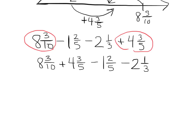Now first thing I see is let's subtract here. We're going to add in 4 and 3 fifths but we're also going to subtract out 1 and 2 fifths. So let's just use the associative property right here and do that practically in our head. So 4 minus 1 is 3, 3 fifths minus 2 fifths is 1 fifth. So now we have 8 and 3 tenths plus 3 and 1 fifth minus 2 and 1 third.